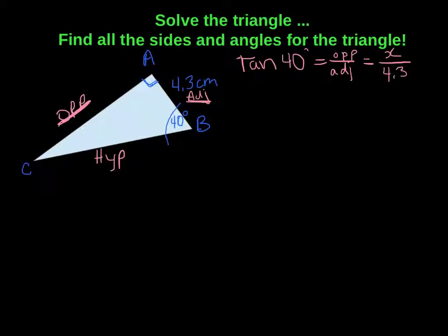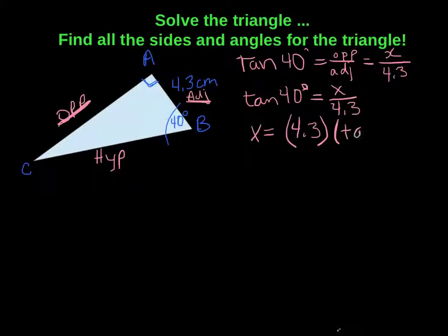Now we want to solve for x. Let's write it so it's a little cleaner. Tan of 40 degrees equals x over 4.3. Solve for x, multiply both sides by 4.3, and we end up getting x equals 4.3 times tan of 40 degrees. Plug that into your calculator, make sure everything's in degree mode, and we end up getting 3.6 centimeters.